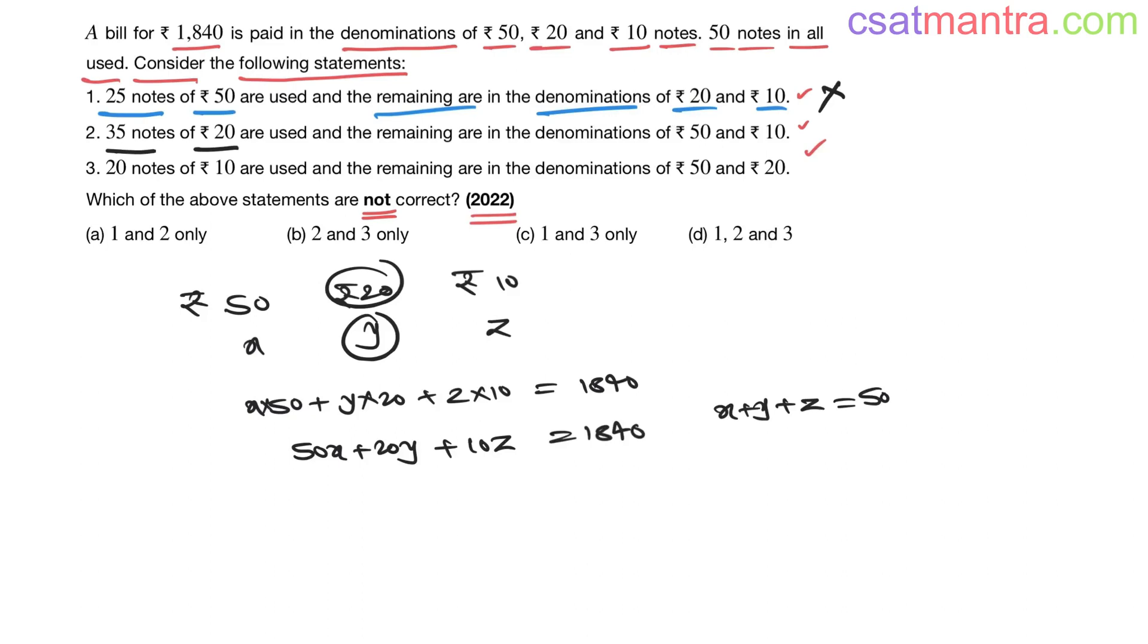Statement 2: 35 notes of ₹20 are used. That means y is 35. So 50x + 20 into 35 + 10z = 1840. So 50x + 10z = 1840 - 700 = 1140. Cancel zero on both sides: 5x + z = 114.